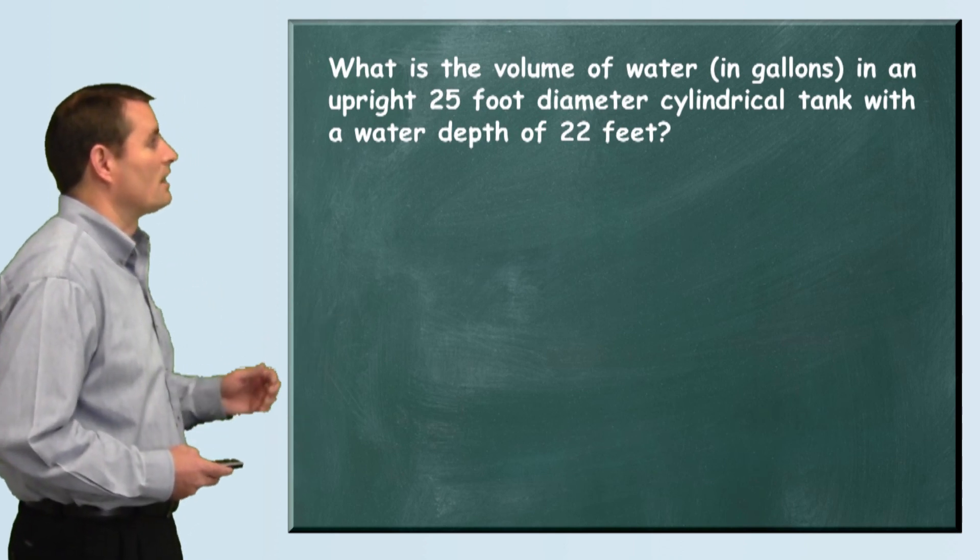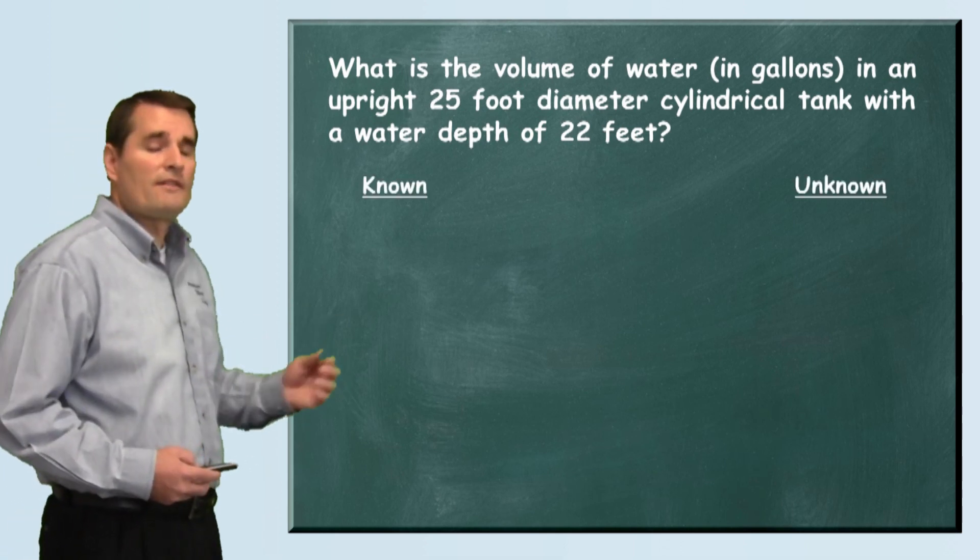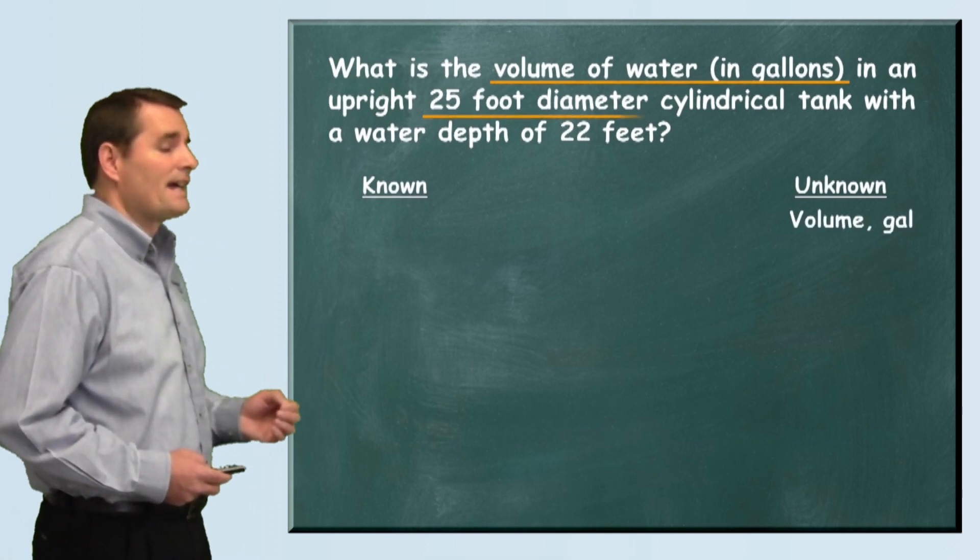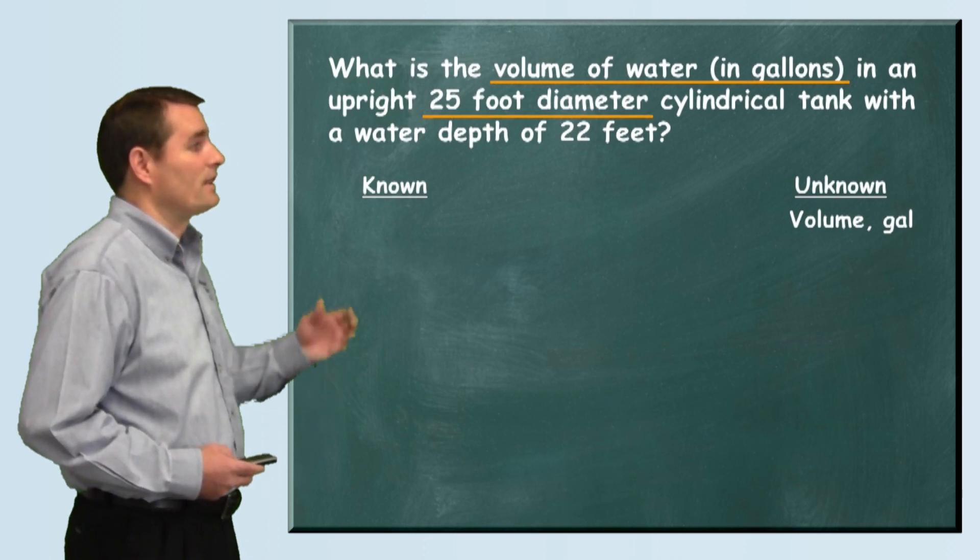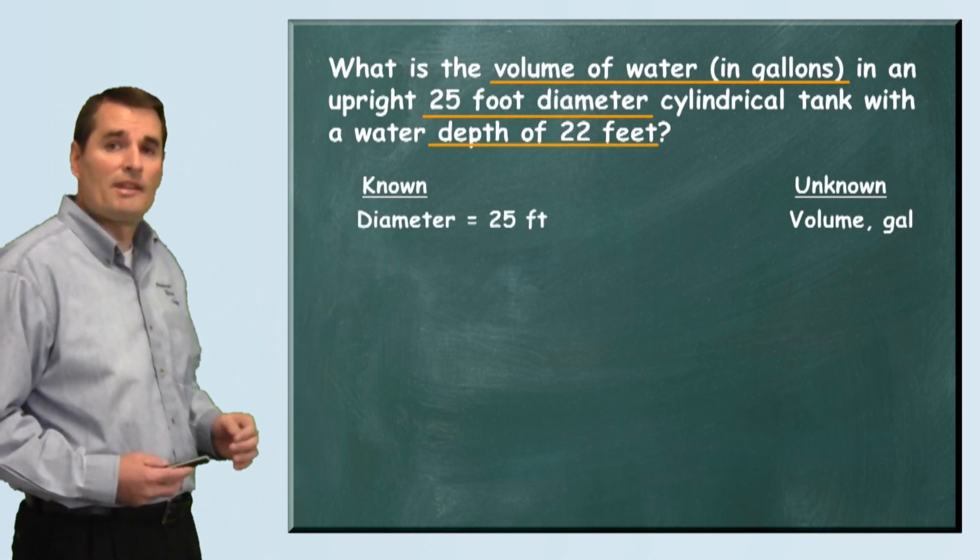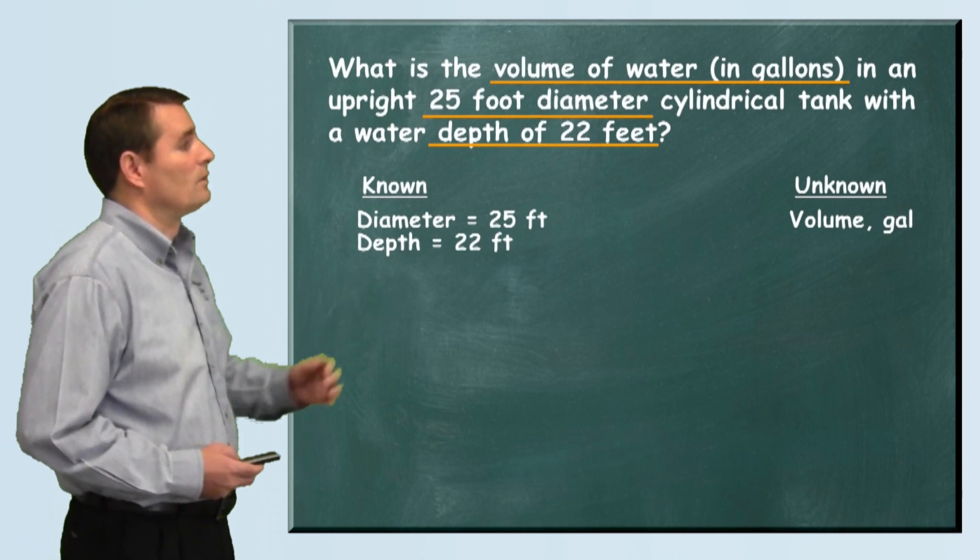Let's write down our known and unknown information. We're trying to find the volume in gallons, so we write that down as our unknown. They tell us that the diameter of this tank is 25 feet, so we write that down. Then they also tell us the depth is 22 feet, so we'll write that down.